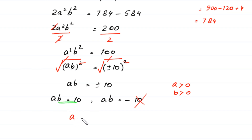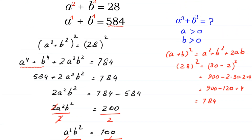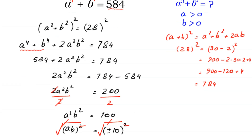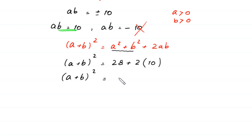Now using the algebraic identity (a + b)² = a² + b² + 2ab, we can find the value of a + b. Substituting a² + b² = 28 and ab = 10, we get (a + b)² = 28 + 2(10) = 28 + 20 = 48.